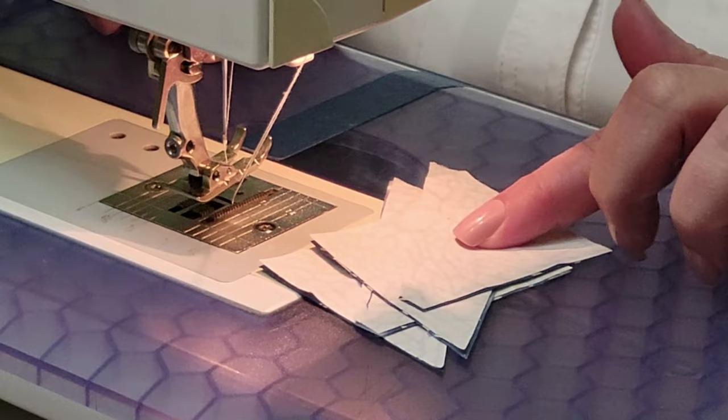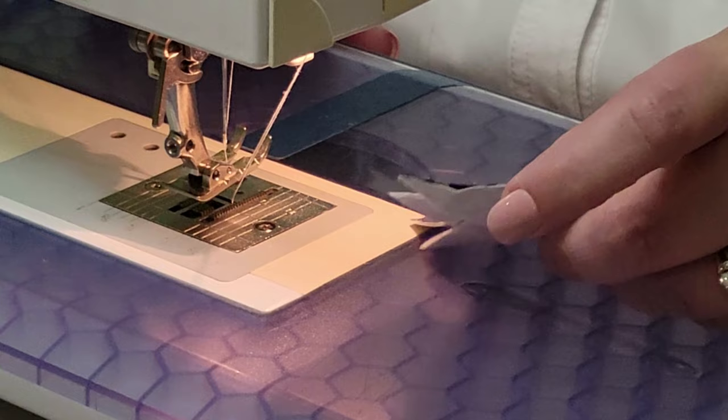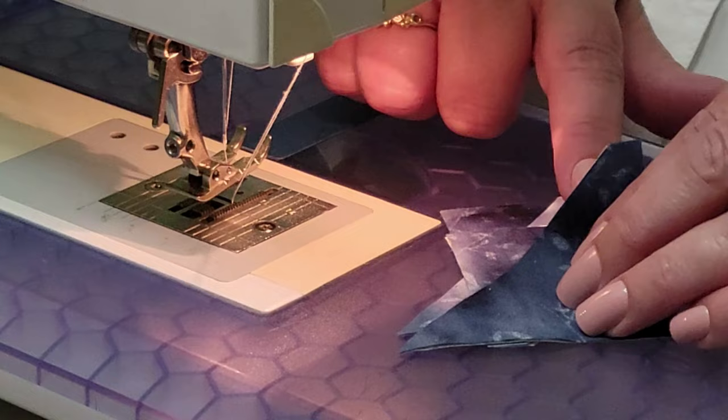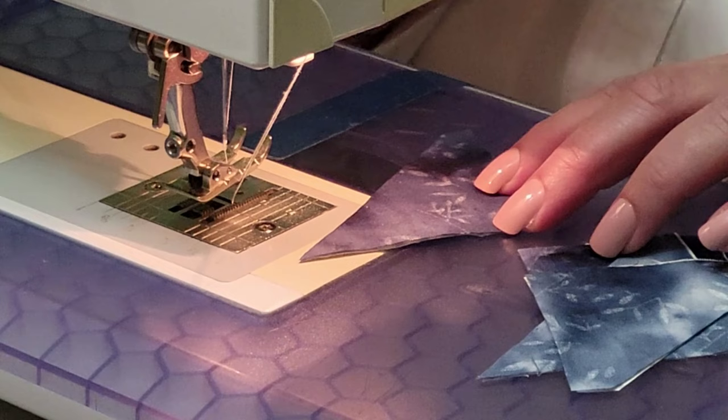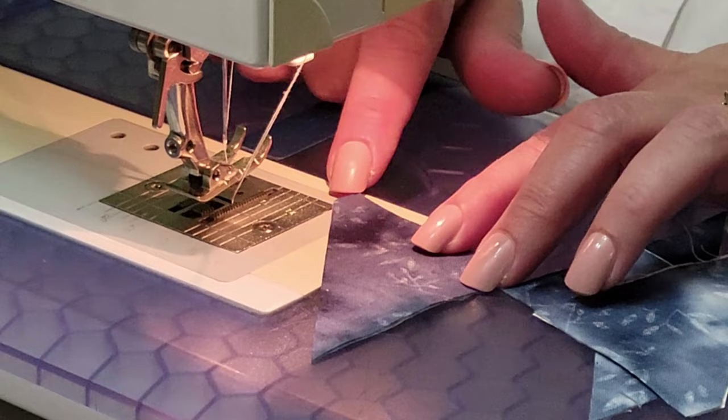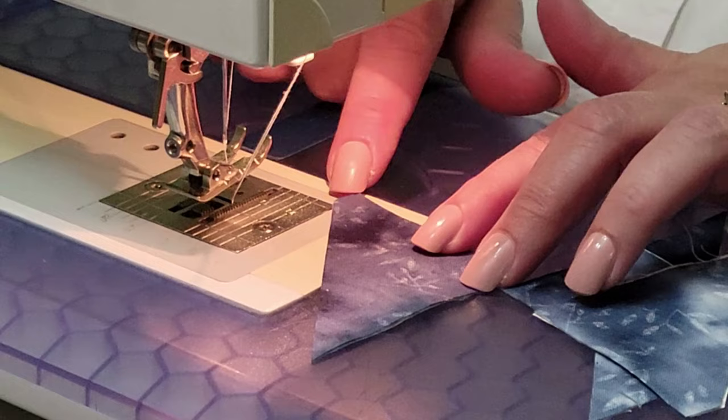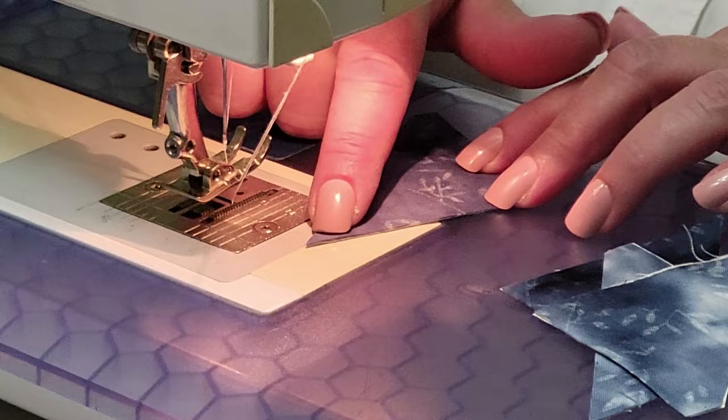My reason for doing that is because I want to bring the point of my cut easy angle half square triangle into the feed dog first, not the blunt end—I want the point end first. So putting the point end first, I'm going to set it under the machine, under the foot.